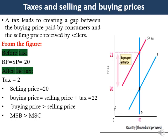Since the buying price represents the marginal social benefit and the selling price represents marginal social cost, when a tax is imposed, the marginal social benefit will exceed the marginal social cost. This will affect both producer surplus and consumer surplus, and of course it will affect the total market surplus, as we will see now.